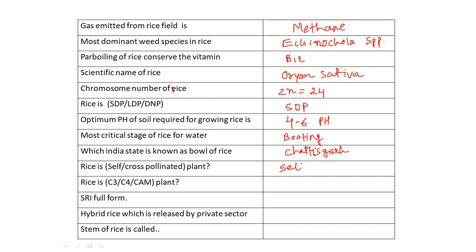Rice is a self-pollinated crop. Rice is a C3 plant — among C3, C4, and CAM plants, rice belongs to the C3 category. The full form of SRI is System of Rice Intensification, which is used to increase the quantity of rice produced.